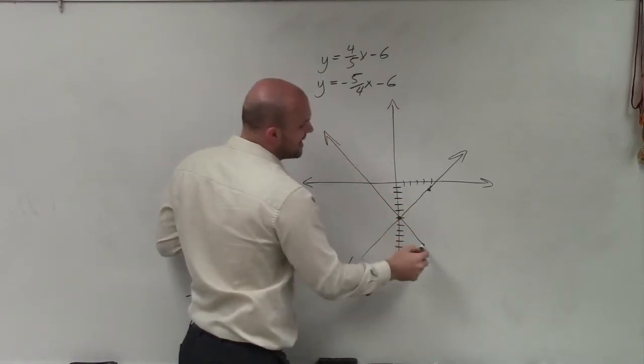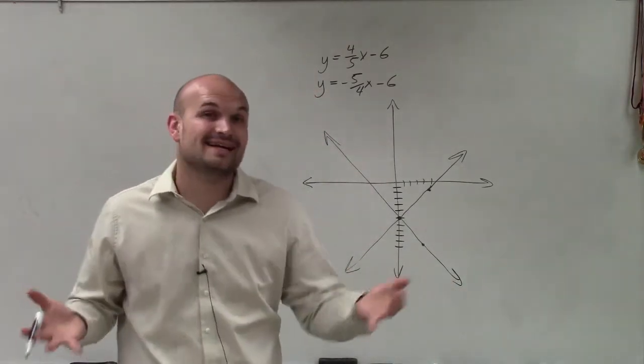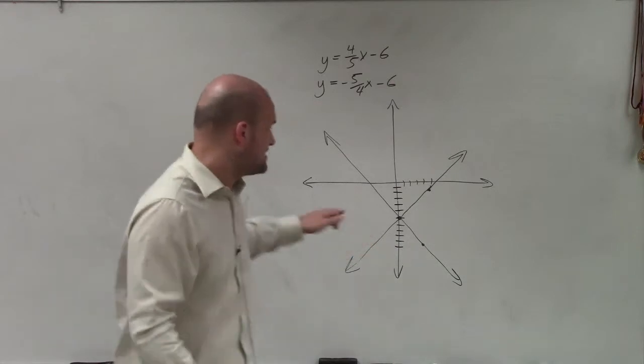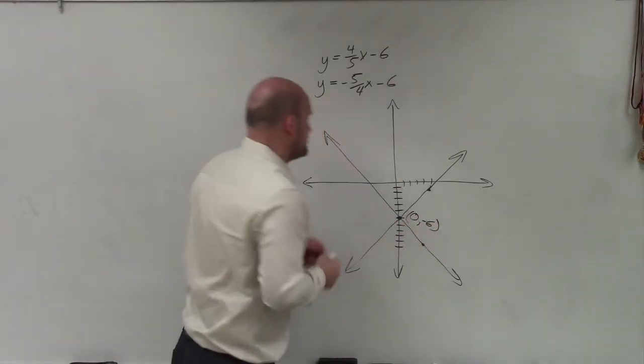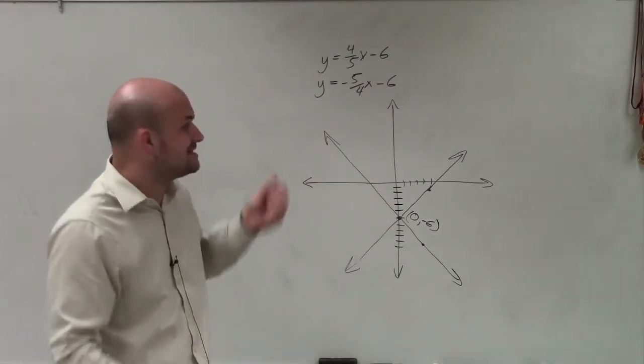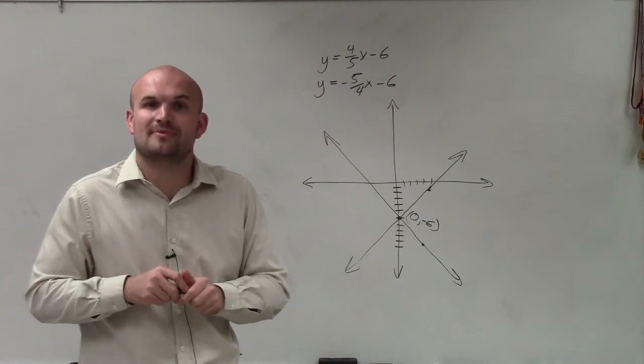And by connecting these dots, we can now verify and see that these two lines are not going to intersect at any other point except for the point (0, -6). So therefore, that is going to be our one solution, and this is a consistent system with an independent solution. Thanks.